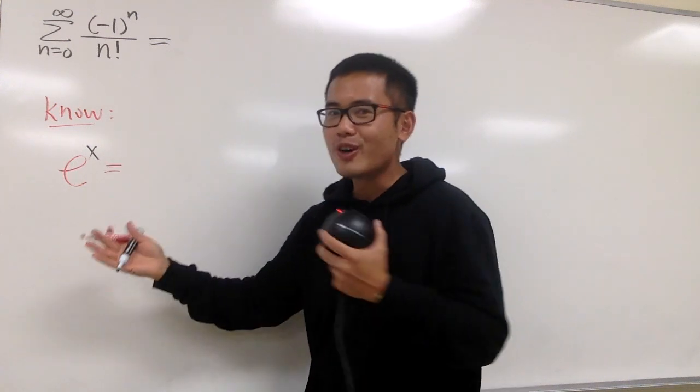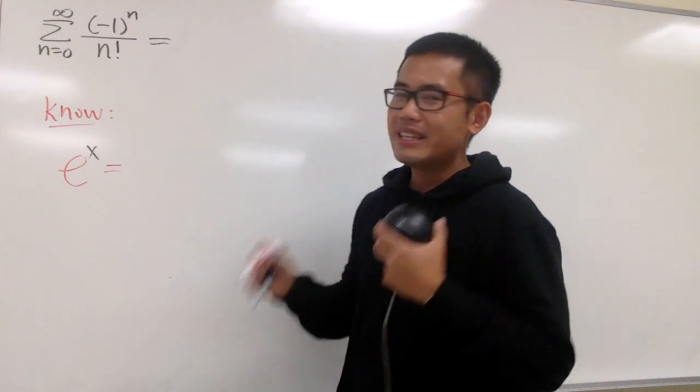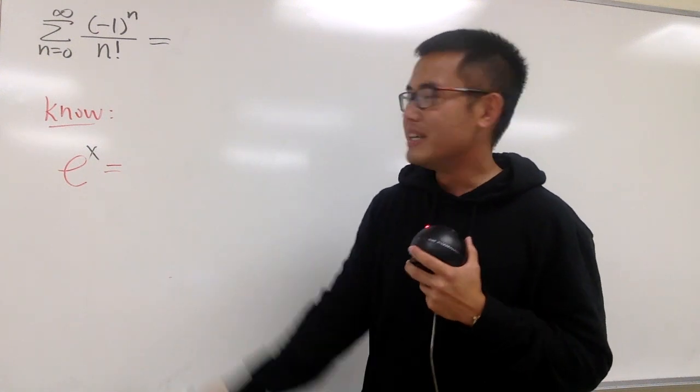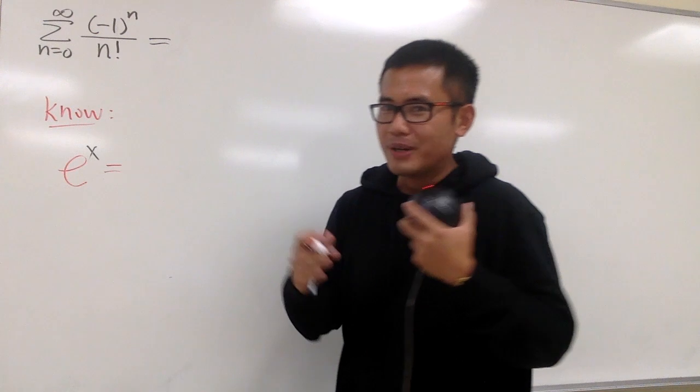and by the way, this is also, I consider it to be one of my friends, all right? The best friend is 1 over 1 minus x. e to the x is just another of my good friends, all right?